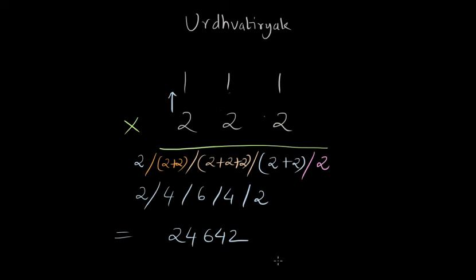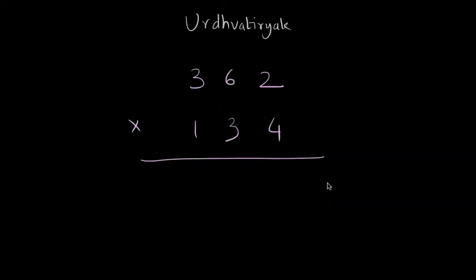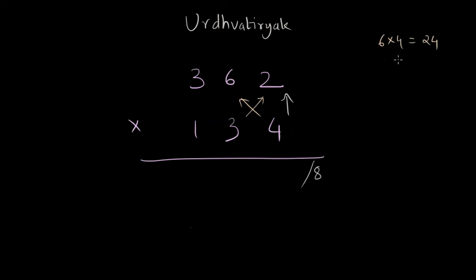But what if there is a carry generated? Let's see an example where we apply the Urdhva Thiryak method with carries. First we multiply two with four and write it at the rightmost place with a slash. Then we go for cross multiplication and multiply six times four and three times two. Six times four is 24, three times two is six, and adding them gives 30. So we write zero and a small three as the carry.